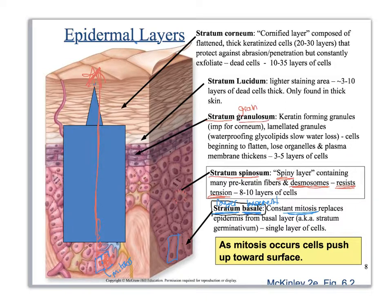The next layer is the stratum granulosum — 'granulosum' sounds like grain. Notice the purple dots in here; those are keratin granules. Up in the stratum granulosum, the cells are getting ready to die and toughen up: they secrete a lot of keratin, release glycolipids for waterproofing, start to flatten, recycle their organelles, and their plasma membrane thickens up.